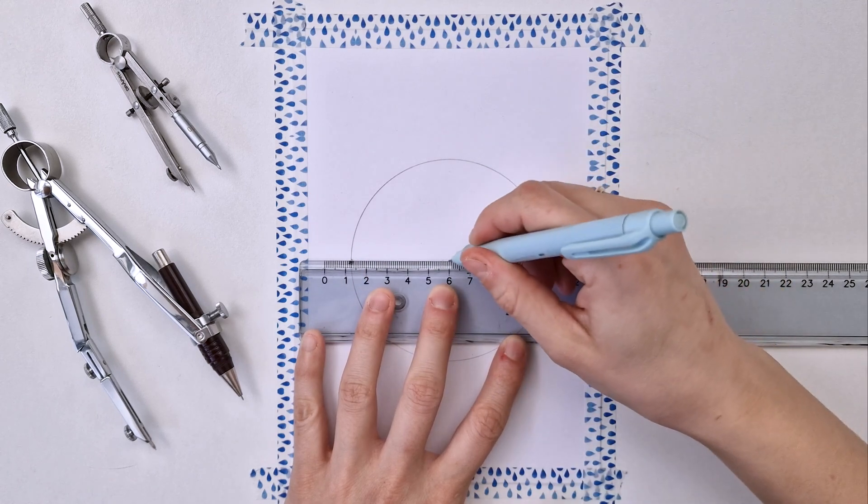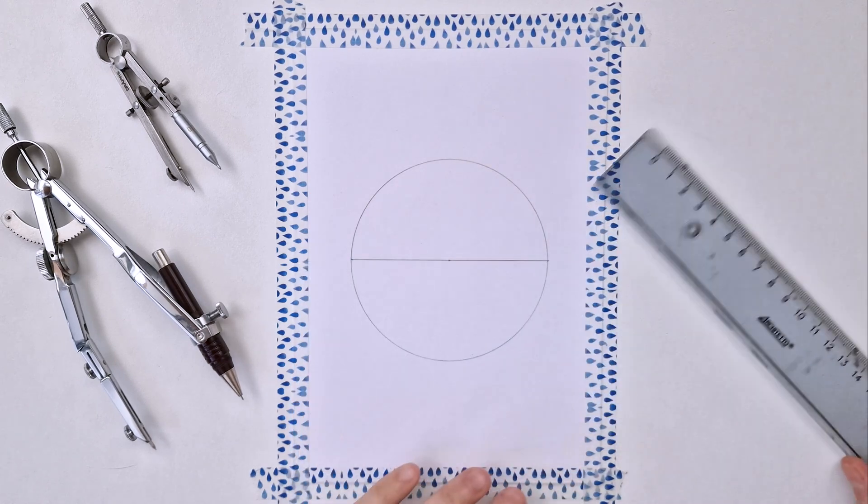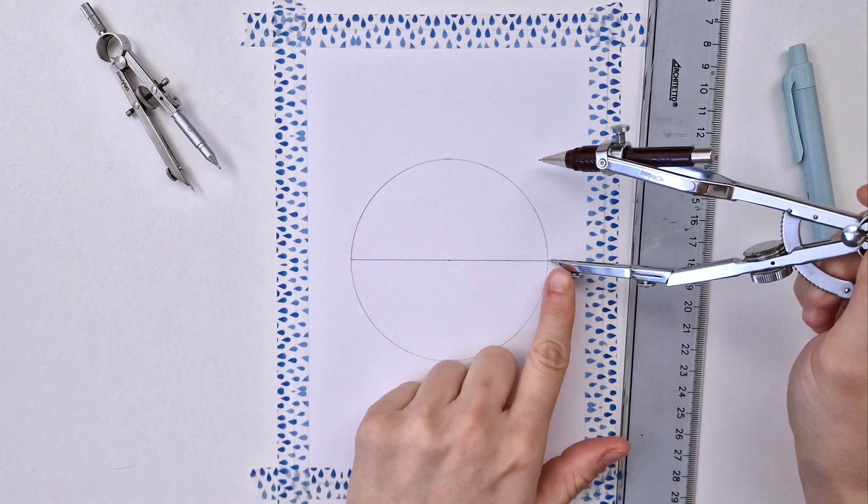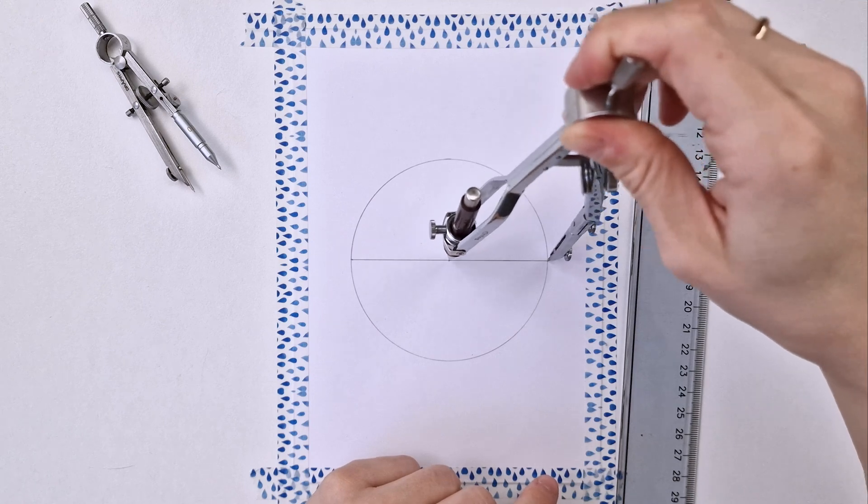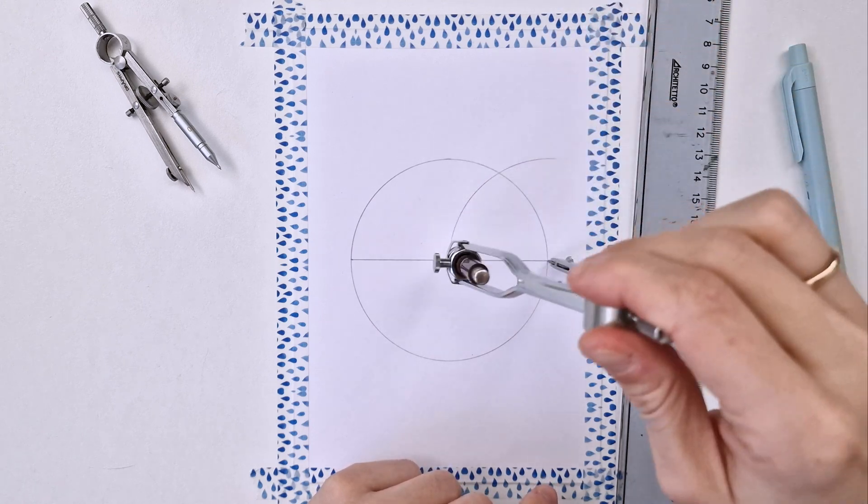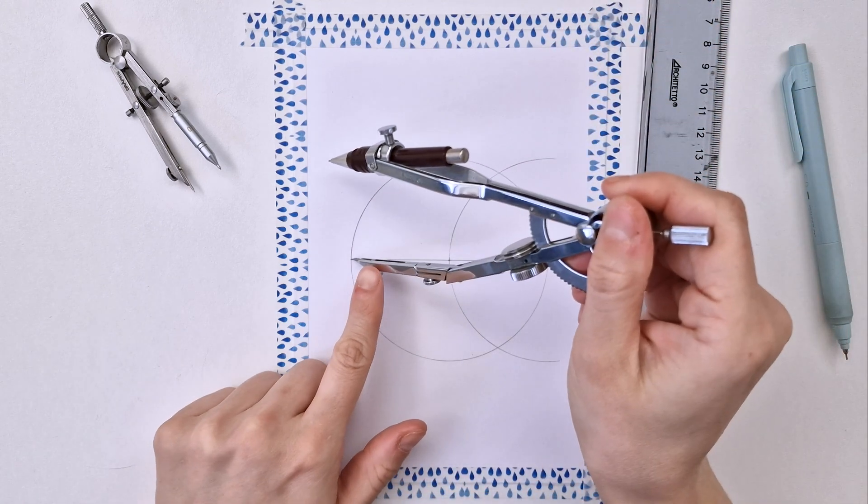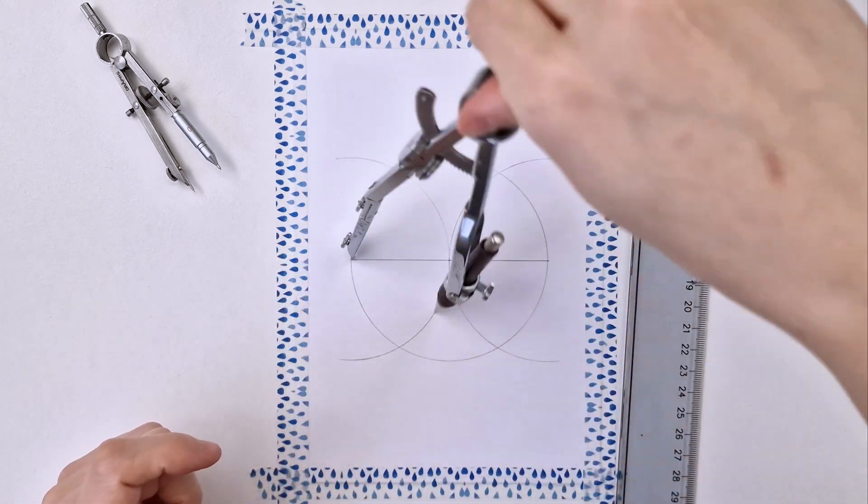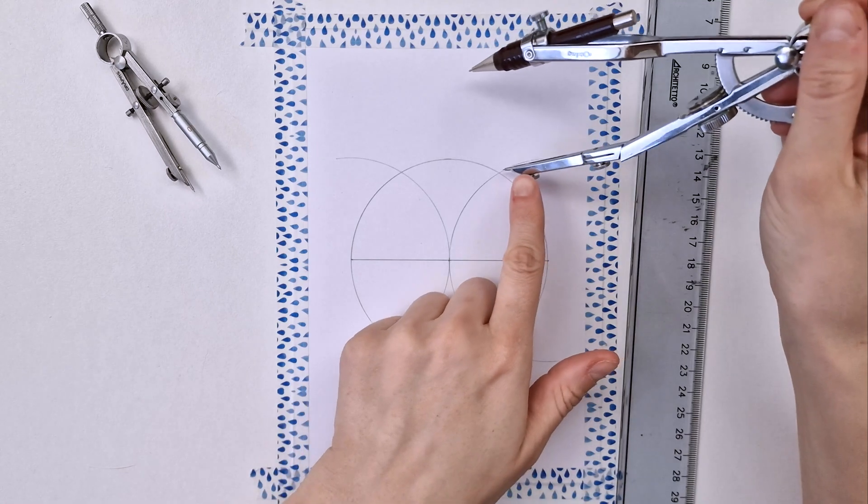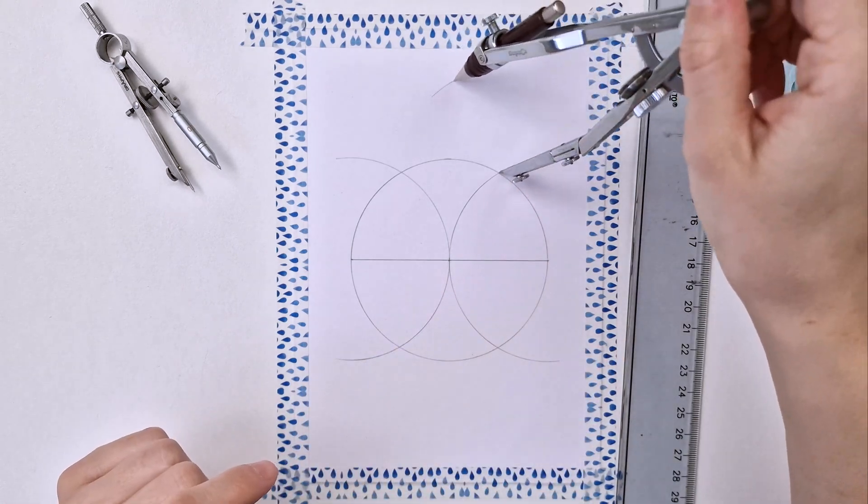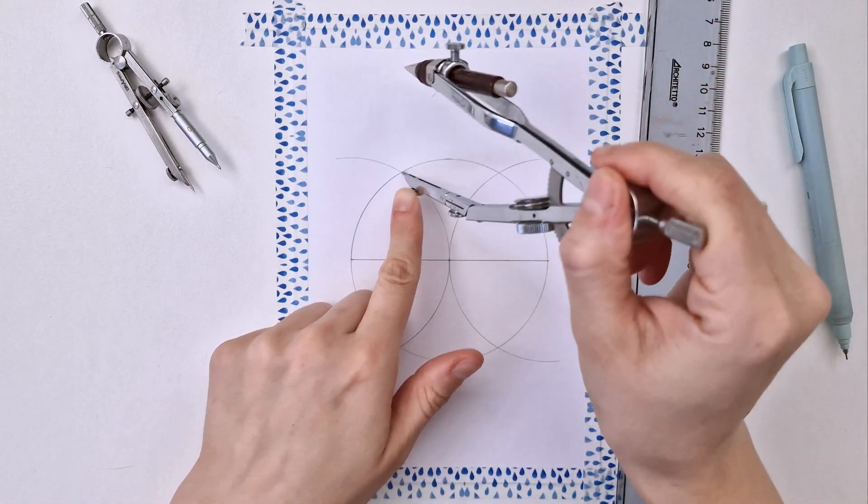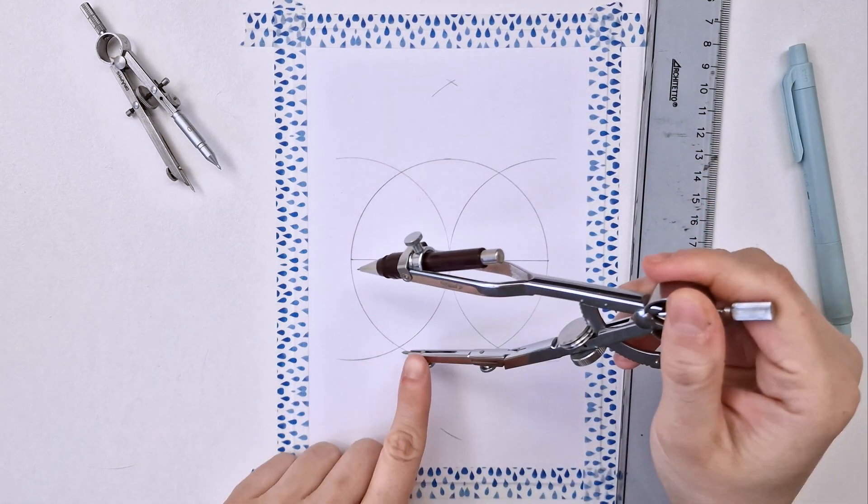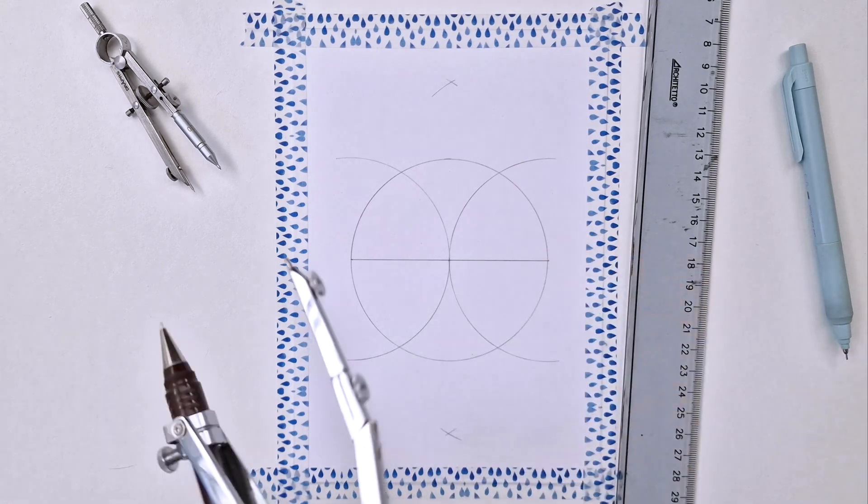Next, I'm using my initial radius and I'm going to draw two semicircles, one on the right and one on the left. Using the intersections between these semicircles and the circle, I'm pointing my compass and drawing two marks up here and two below.